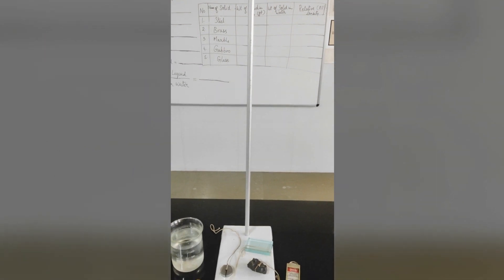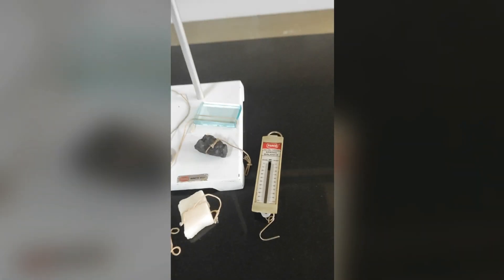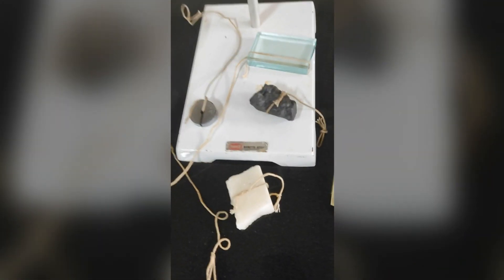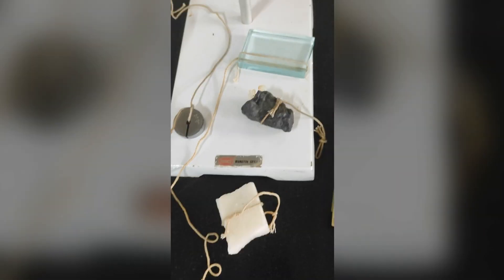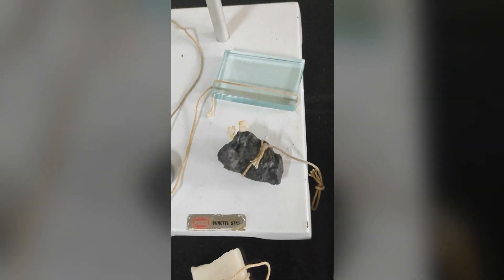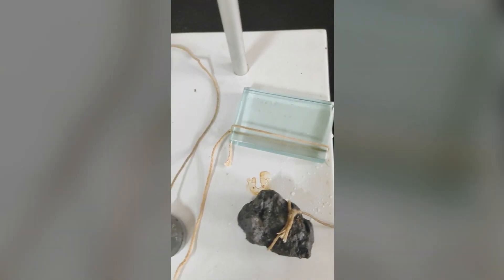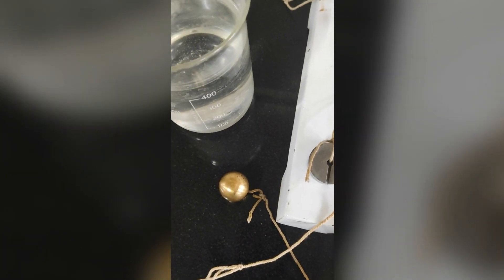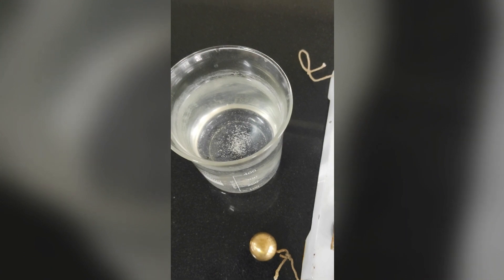The apparatus required for this purpose are stand, spring balance and few solid objects made of different materials. I am going to measure the relative density of marble, gabbro, glass, steel and brass objects. We also need a beaker filled with water.